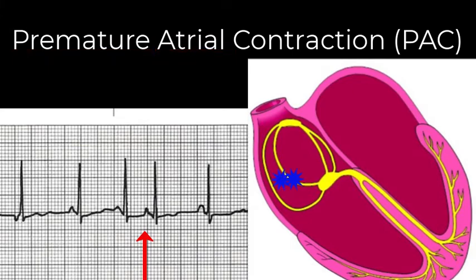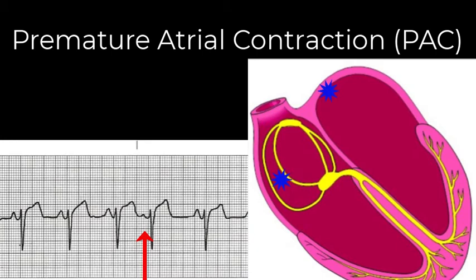PACs may come from a single irritated cell or location, or they may be generated from numerous sites. Because the impulse is starting above the AV node but not from the SA node, most PACs will have a P wave, but it will be different in appearance — possibly shaped differently, smaller in amplitude, or even inverted. The PR interval will be less than 0.20, and oftentimes less than 0.12, because the closer to the AV node the impulse arises, the shorter the PR interval.